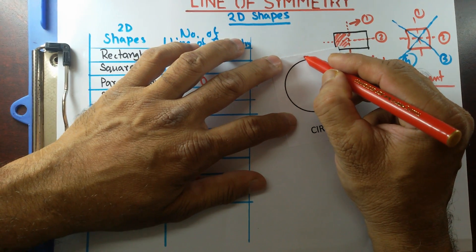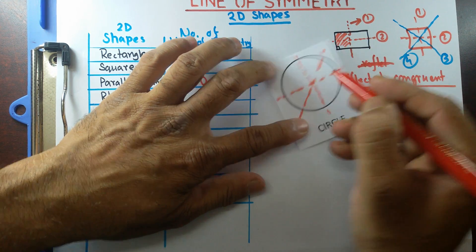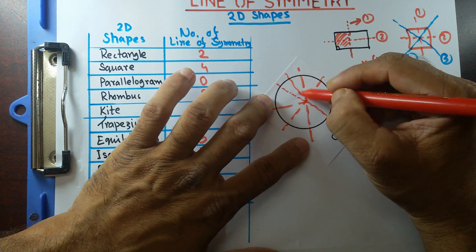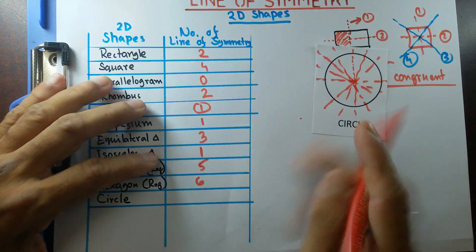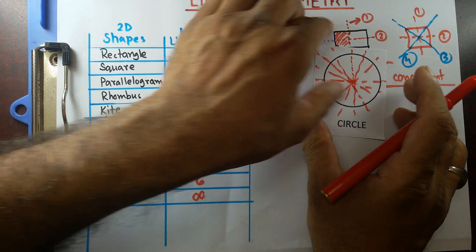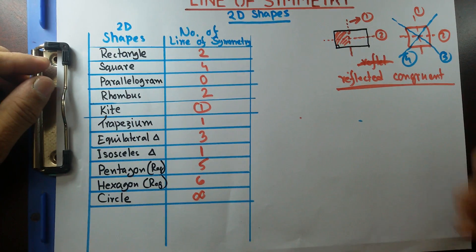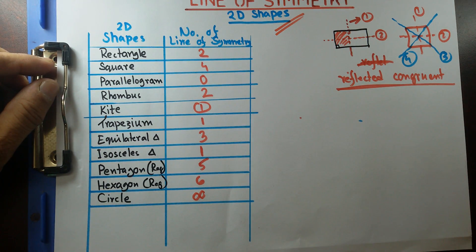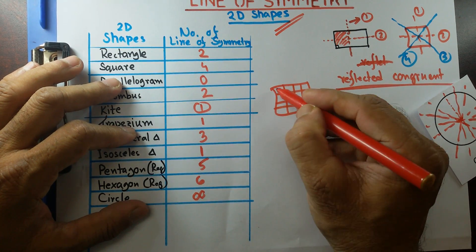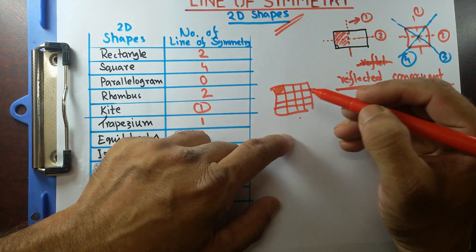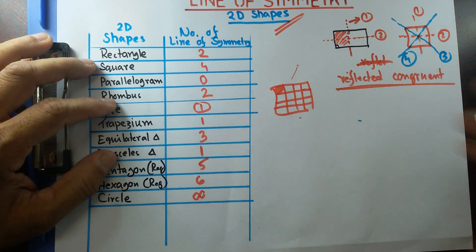Circle — as you can see, it doesn't have any vertices. I can draw lots and lots of lines of symmetry. I can draw it like that, I can draw it like that — I can fold it through the center any way I like. So a circle has an infinite number of lines of symmetry. I hope you understand that. If you have any questions, please write them down. See you in the next video. Thank you, have a nice day.